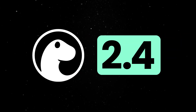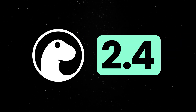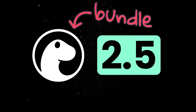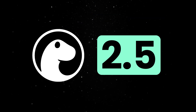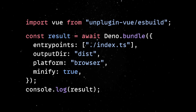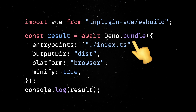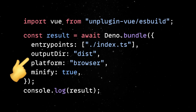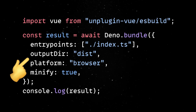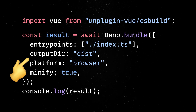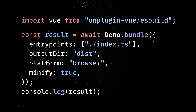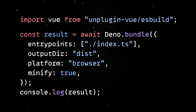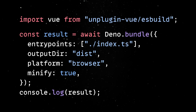Finally, in 2.4, Dino brought back the bundle command, but now in 2.5 you can run bundling programmatically from your code. Thanks to a new runtime API, you can now trigger a bundle step inside a script with full control over entry points, output directories, minification, and even plugins. This offers greater flexibility in managing bundling, as you can integrate and embed your bundle step in a variety of workflows.